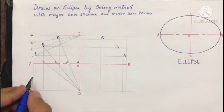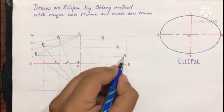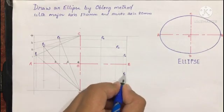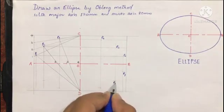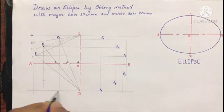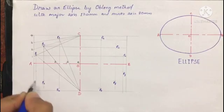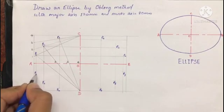Now name them: this was P6, then P7, P8, P9, P10, P11, and P12.